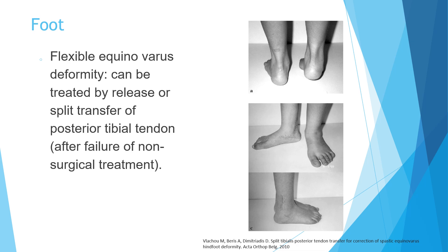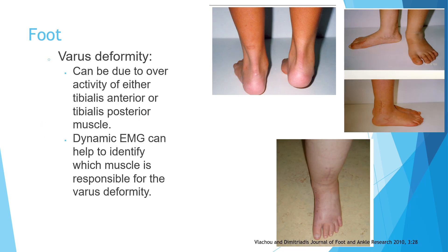Flexible equinovarus deformity — the child walks on the outer and anterior foot surface — if not corrected with bracing, requires surgery: either release and lengthening of the posterior tibial tendon, or a split transfer of the posterior tibial tendon, where half is transferred to the anterior foot to decrease equinus pull and equalize the varus pull.